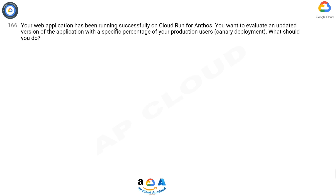Question 166. Your web application has been running successfully on Cloud Run for Anthos. You want to evaluate an updated version of the application with a specific percentage of your production users. Canary Deployment. What should you do?